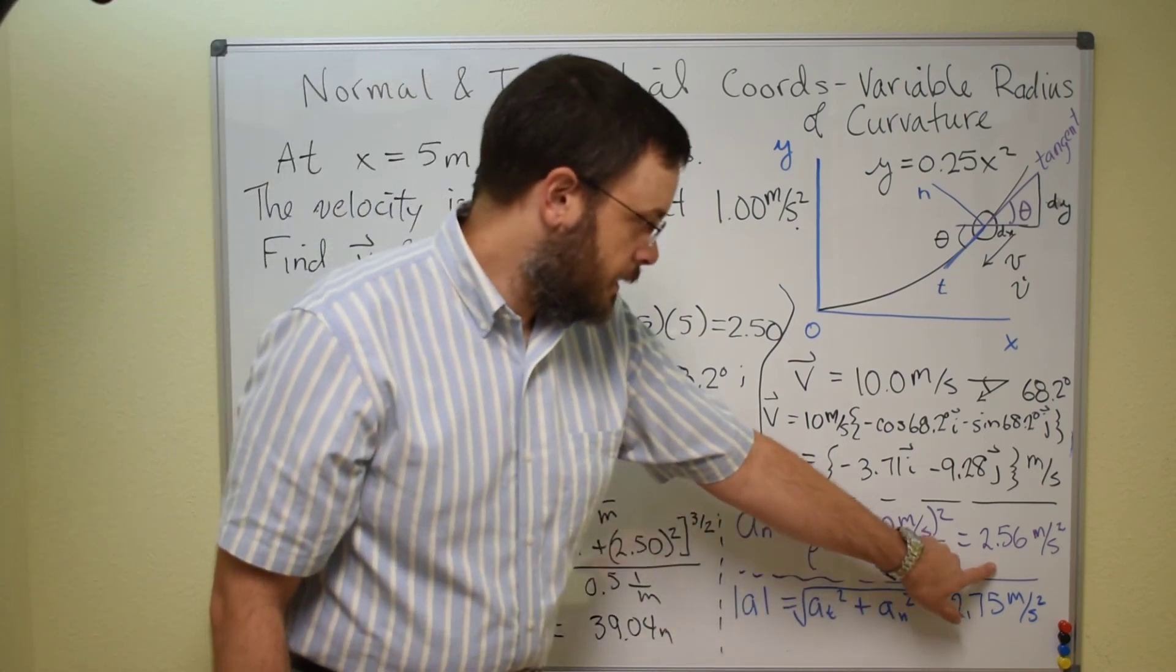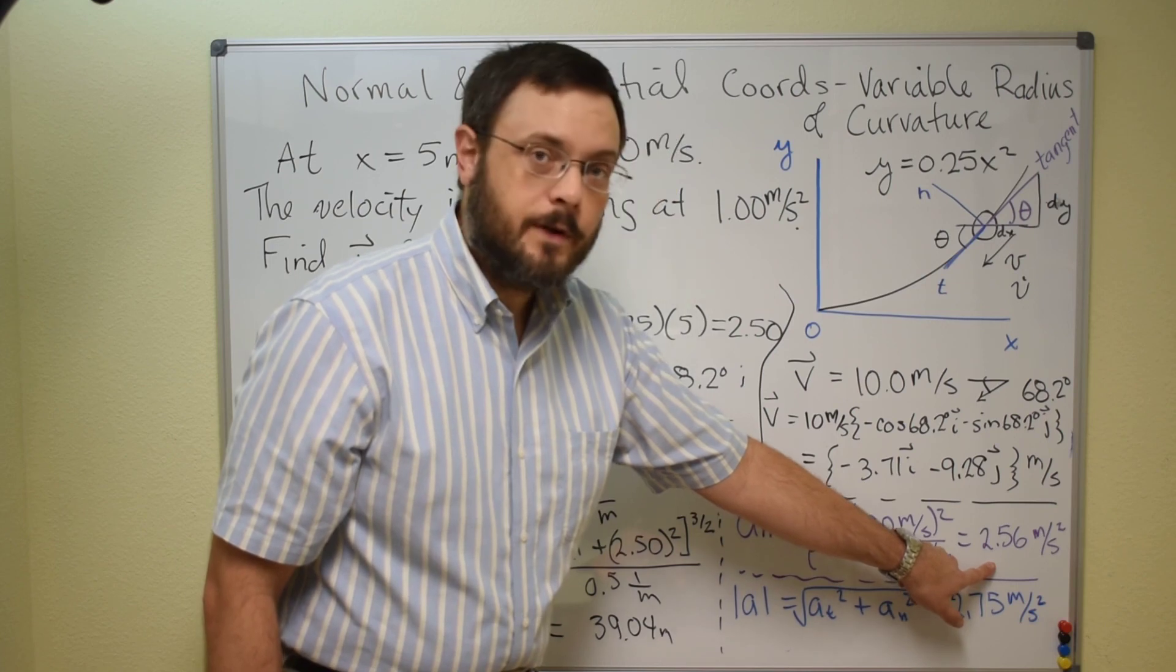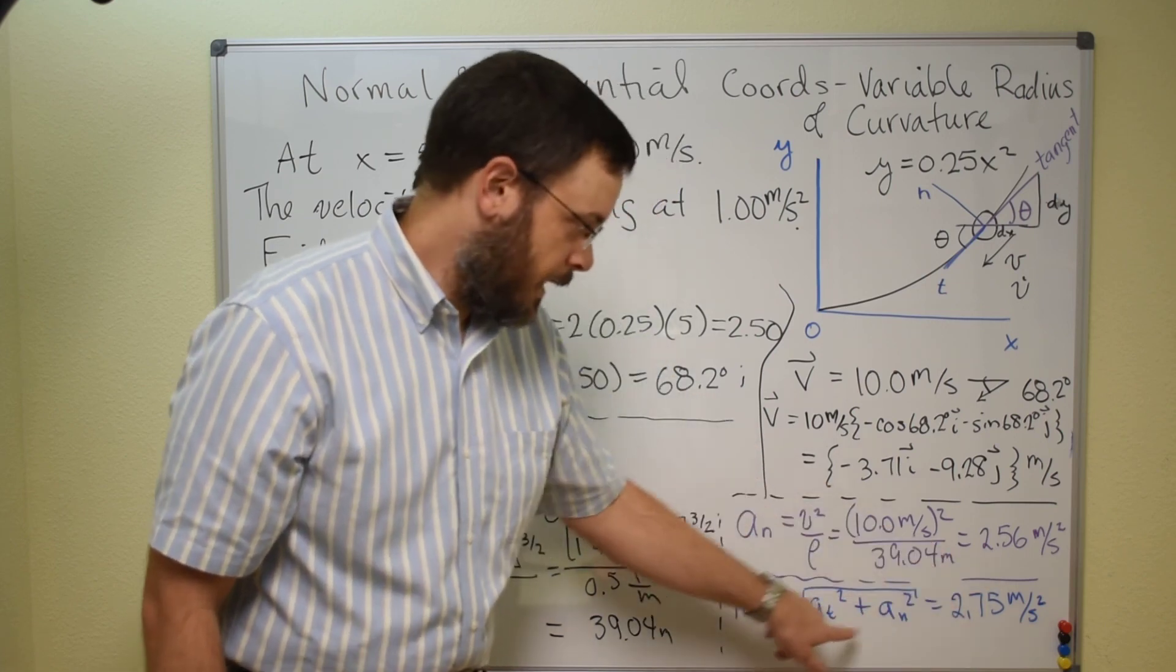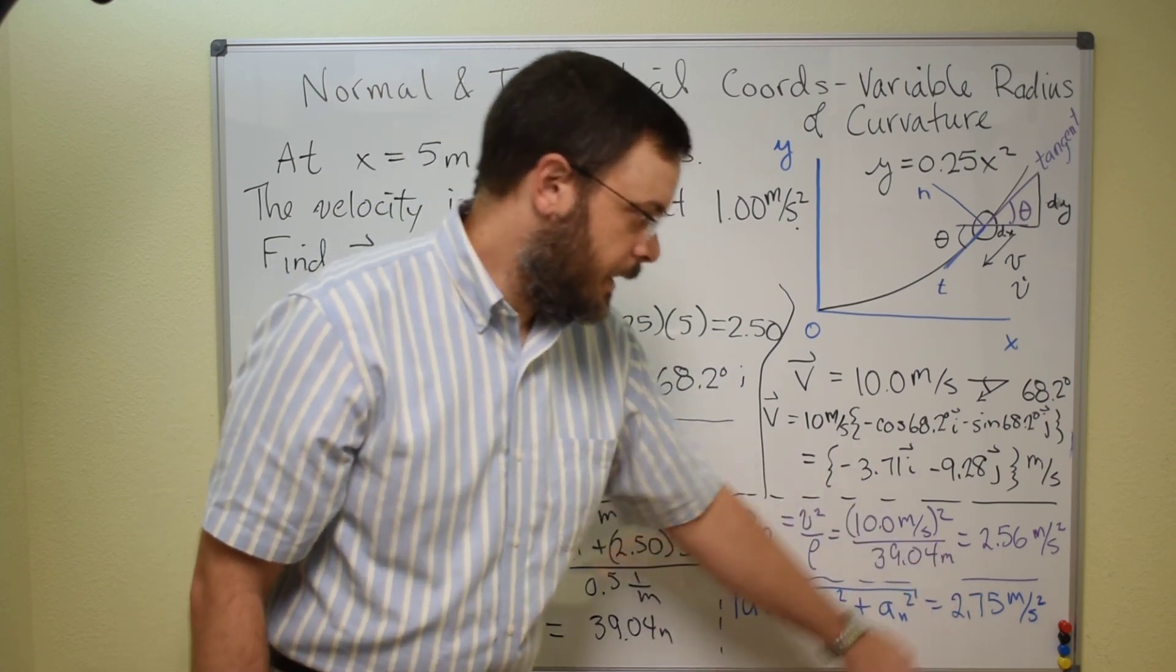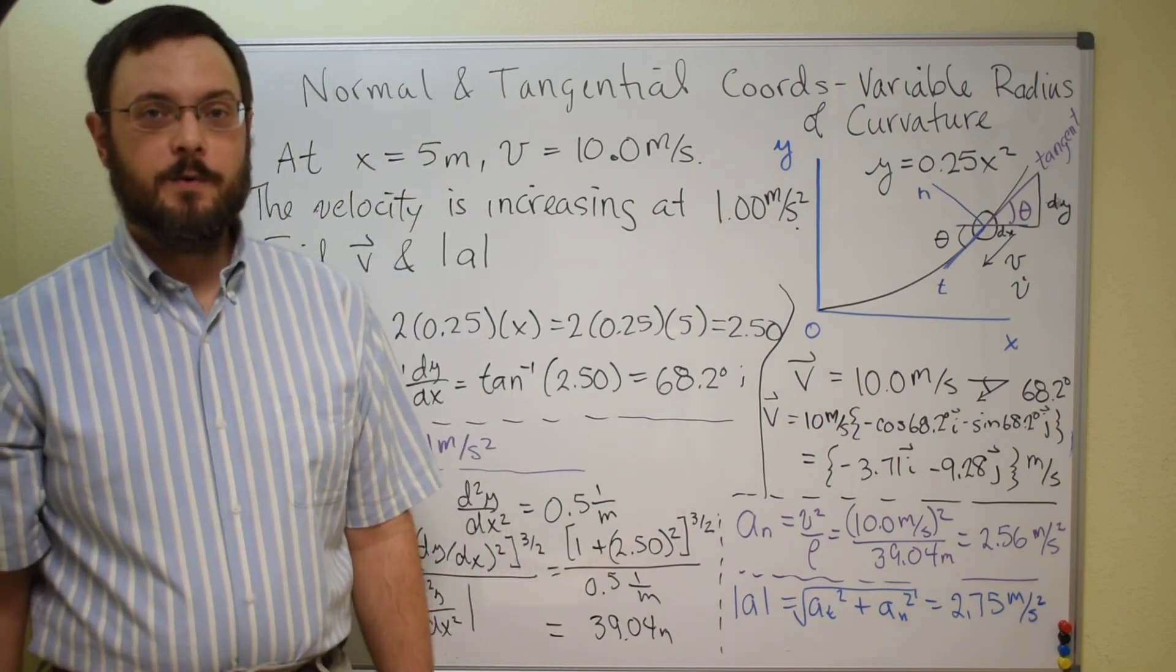plus the an squared, 2.56 meters per second squared. Add those together, take a square root, and you get the 2.75 meters per second squared.